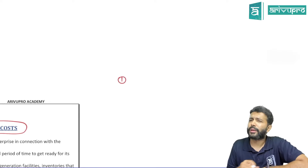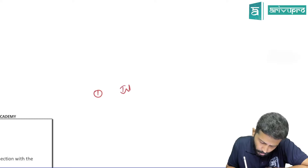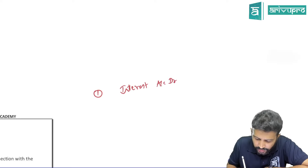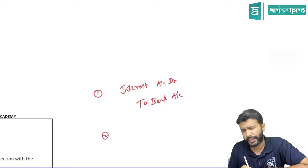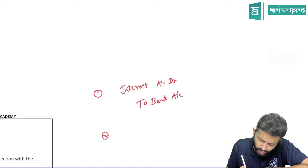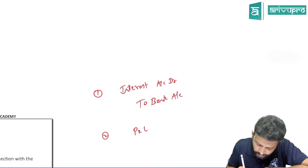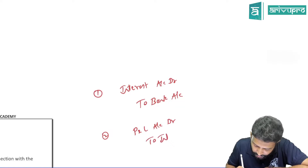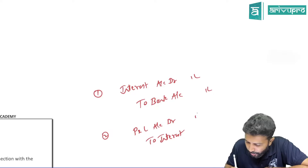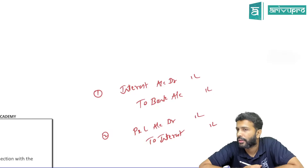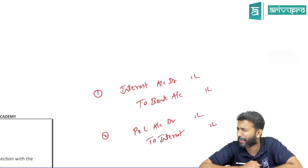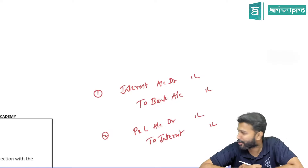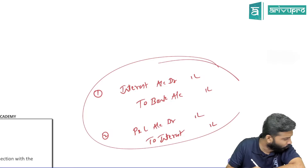What is the journal entry for interest? If you have paid the interest: interest account debit to bank account. This interest is an expense, so expenses should be transferred to P&L. The transfer entry is P&L account debit to interest. If the interest is 1 lakh, you will pass this journal entry for 1 lakh and close it. So for two entries, one whole accounting standard — looks like the accounting standard board people have a lot of free time!